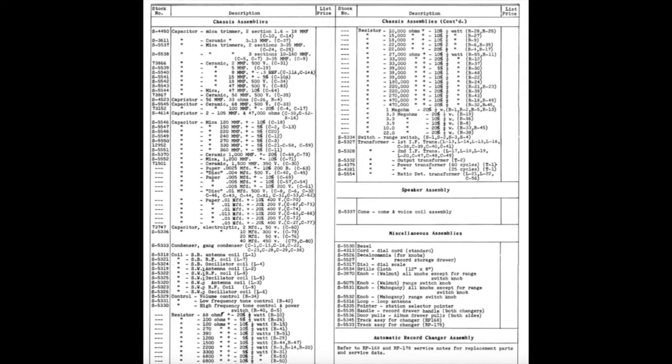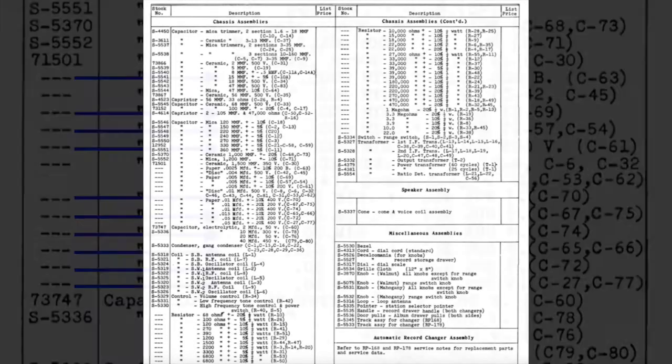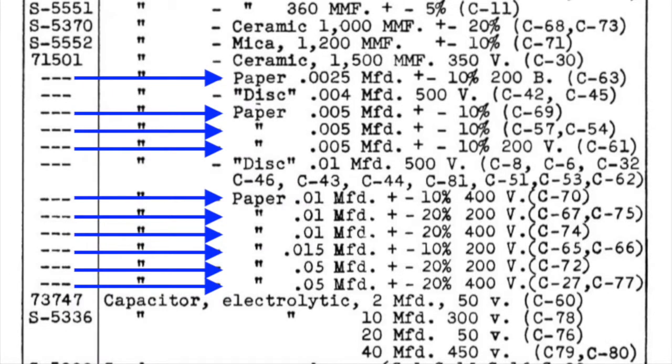Then I check the paper capacitors. In this case, there are about 14 of them. They have a different failure mode, but they should be replaced too. In the worst case, they can cause tubes or transformers to be overloaded.